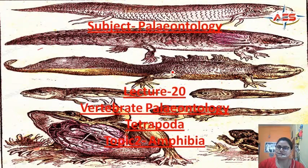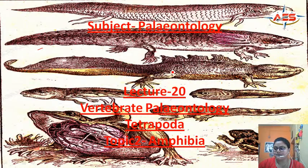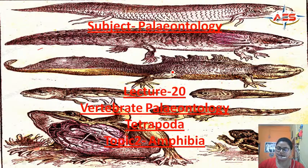In gnathostomatas we had placodermi, chondrichthyes and osteichthyes. The subphylum gnathostomatas — as the second super group, that is tetrapoda — we will study different classes. First we will study about amphibia.